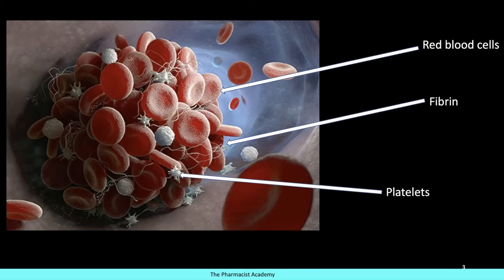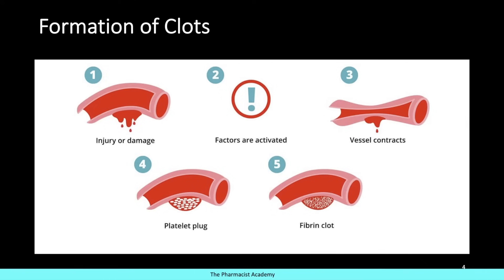This is a general overview of how clots normally look. As you can see, there are red blood cells and fibrin, which is a mesh-like protein that traps the platelets and keeps everything together. Normally, if you have an injury or damage to the blood vessels, your body will activate the clotting factors responsible for regulating and forming a clot. Your platelets are going to be activated, recruited, and sent to the site of injury. Meanwhile, clotting factors go through a series of mechanisms to activate thrombin, which activates fibrinogen, creating fibrin. The blood vessel also contracts to reduce blood loss. The platelet plug is then formed and fibrin does its final job of holding everything together and trapping more platelets.